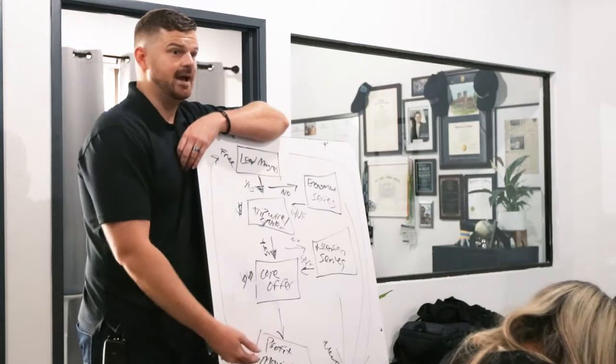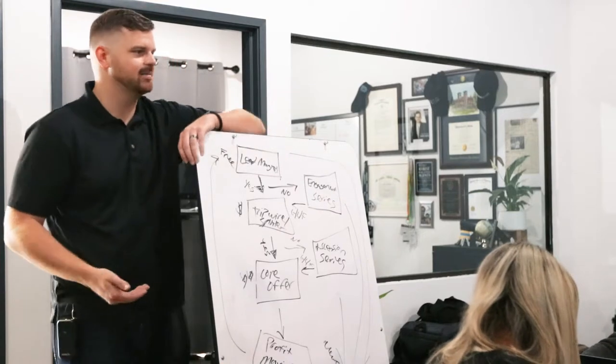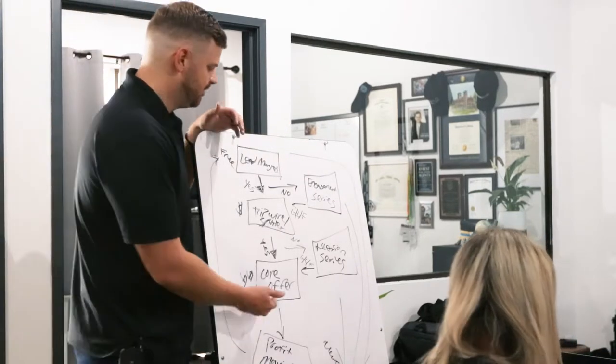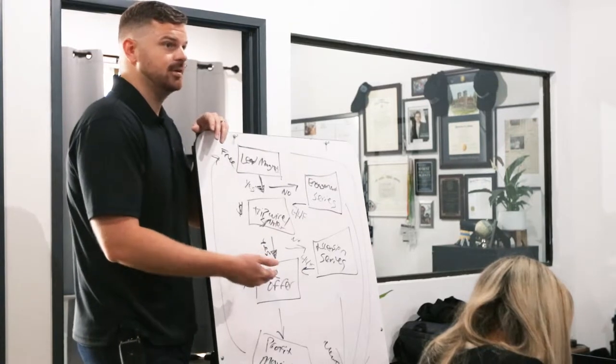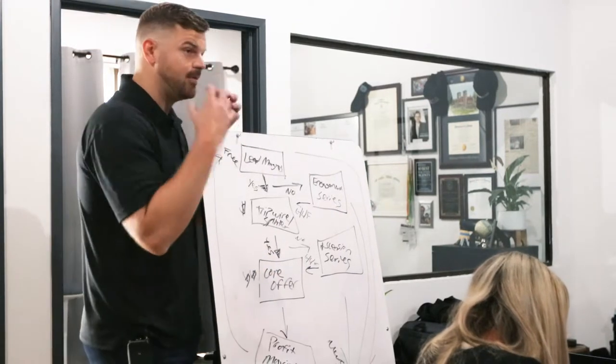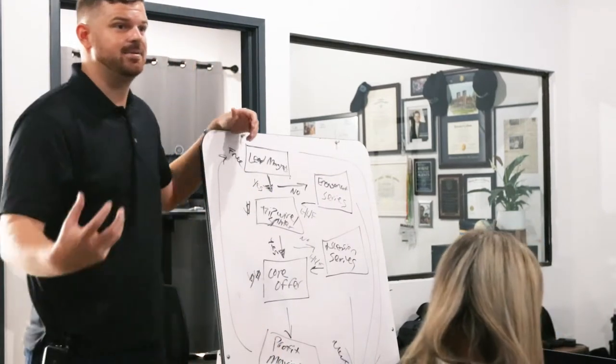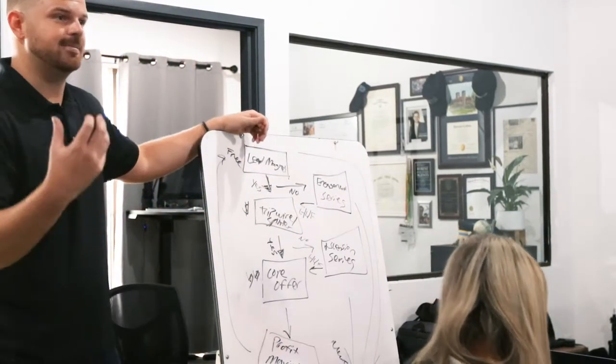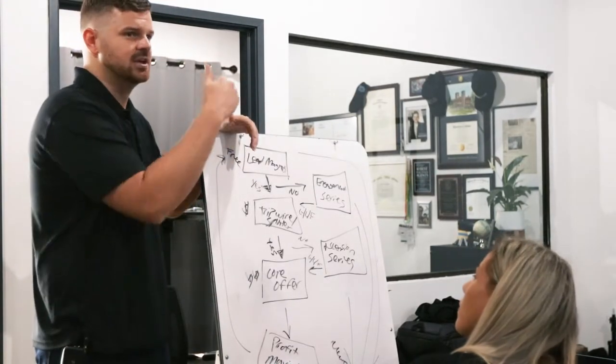You should be getting them into what is called the profit maximizer, and the profit maximizer is something that is going to make you more profit. A real estate agent that sells listings should instantly introduce somebody into their VIP program. Why? So that way they can get referrals from that person. That is how you maximize the profit on somebody.